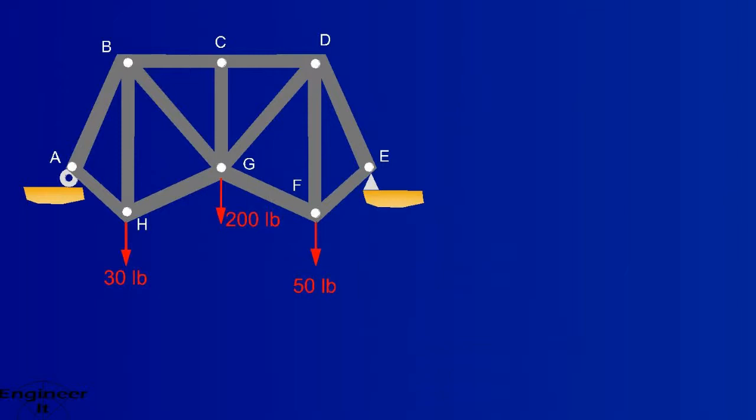So here's a truss with some complexity. The problem is asking for the forces in the following members. The problem gives us some dimensions and it looks like it's symmetrical here. This should help.